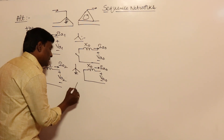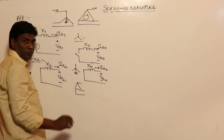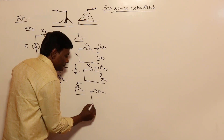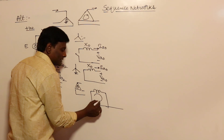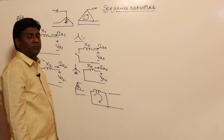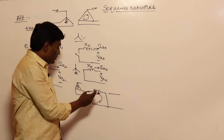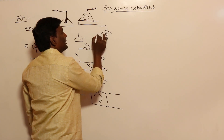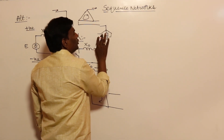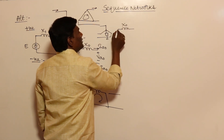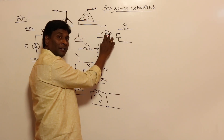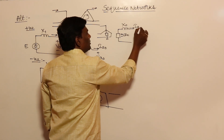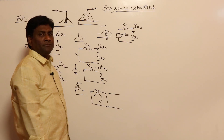For a delta connected machine, zero sequence currents flow in the phases but not in the lines. For a star connection grounded through some impedance Zn, the zero sequence network has X0 in series with 3Zn (three times the grounding impedance), with current Ia0 and voltage Va0. This covers star ungrounded, star solidly grounded, star grounded via reactance, and delta configurations.